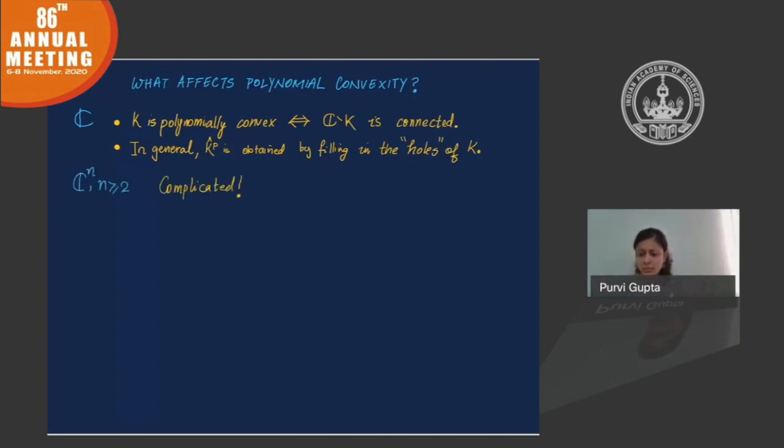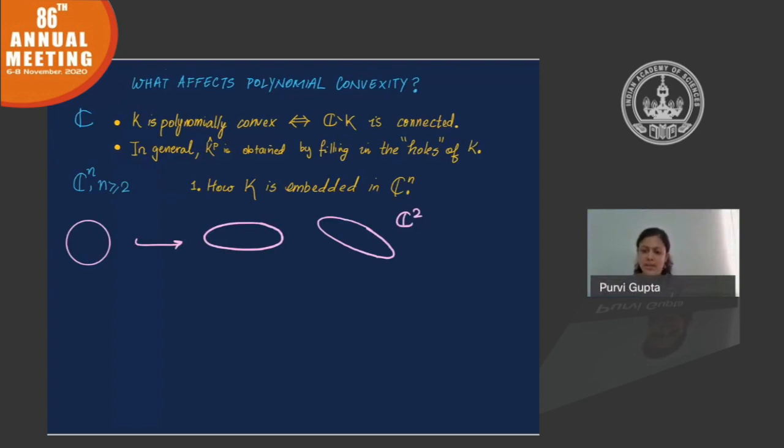In higher dimensions, things are a little bit more complicated. There is no complete topological characterization. But I want to mention two things that influence polynomial convexity. Let's first take the example of a circle. I want to think of the circle as sitting inside the two dimensional complex space. My claim is that you can place it in different ways. You can place it in ways so that the set is polynomially convex. You don't get anything new when you take the hull. Or you can place it in a way that it's not polynomially convex. When you take the hull, you actually get a two dimensional disk.